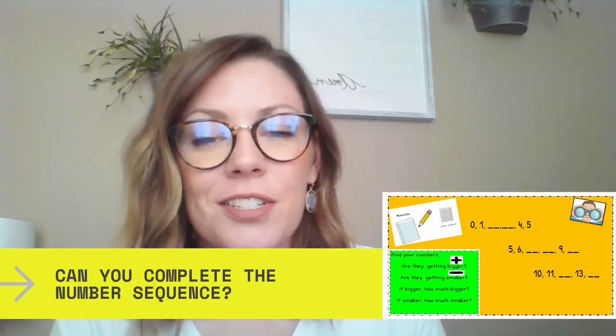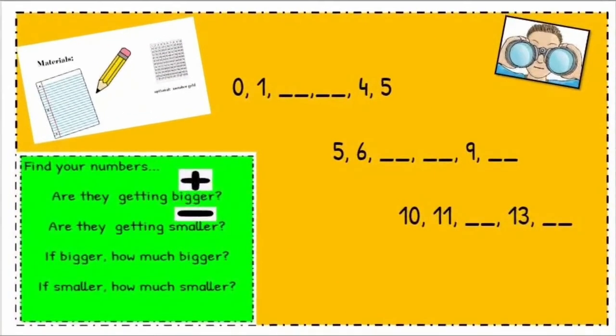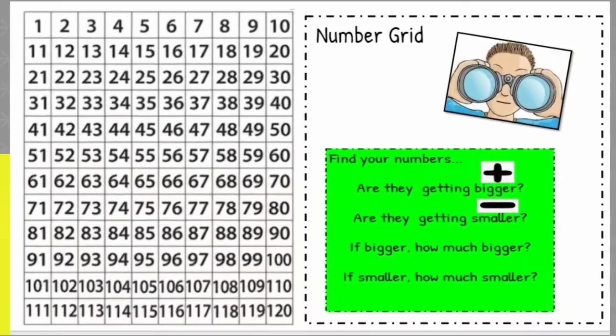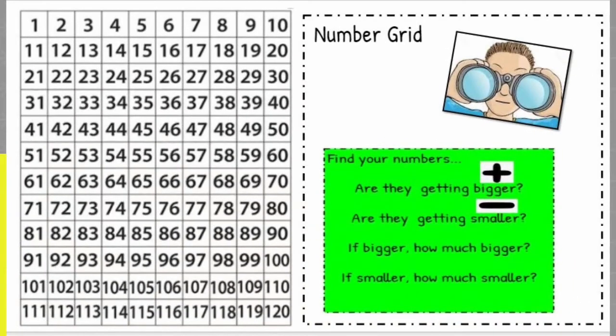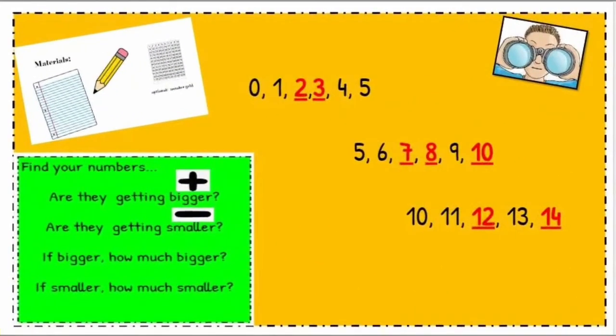Let's check out another sequence. I made it a little bit different — you'll notice that there aren't as many numbers in these sequences. There's more missing in the middle of the sequence. So again, what's happening to the numbers? Are they getting bigger? Are they getting smaller? If they're getting bigger, how much bigger? Go ahead and pause and solve. Let's check and see how you did.